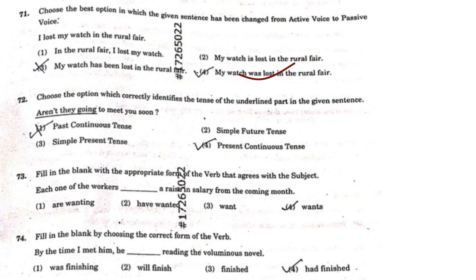Next, question 72: 'Choose the option which correctly identifies the tense of the underlined part in the given sentence.' The sentence is: 'Aren't they going to meet you soon?' We have to identify which tense this is. The correct answer is the fourth option — present continuous tense.